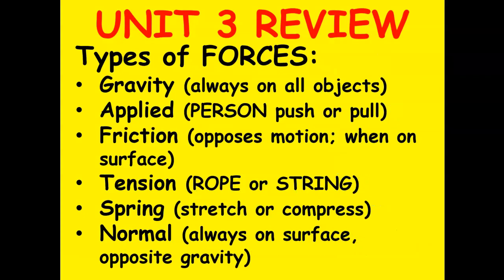So the six different types of forces. We have gravity, which is always acting on all objects. It is the force that pulls objects to earth. Applied force is when a person is pushing or pulling the object. Friction is the force that opposes motion. It is generally when you are on a surface. Tension is with a string or a rope. A spring force is with a spring that stretches or compresses. And then you have normal force, which is always on a surface that is opposite gravity. It is perpendicular to the surface and essentially stops things from going through other things.